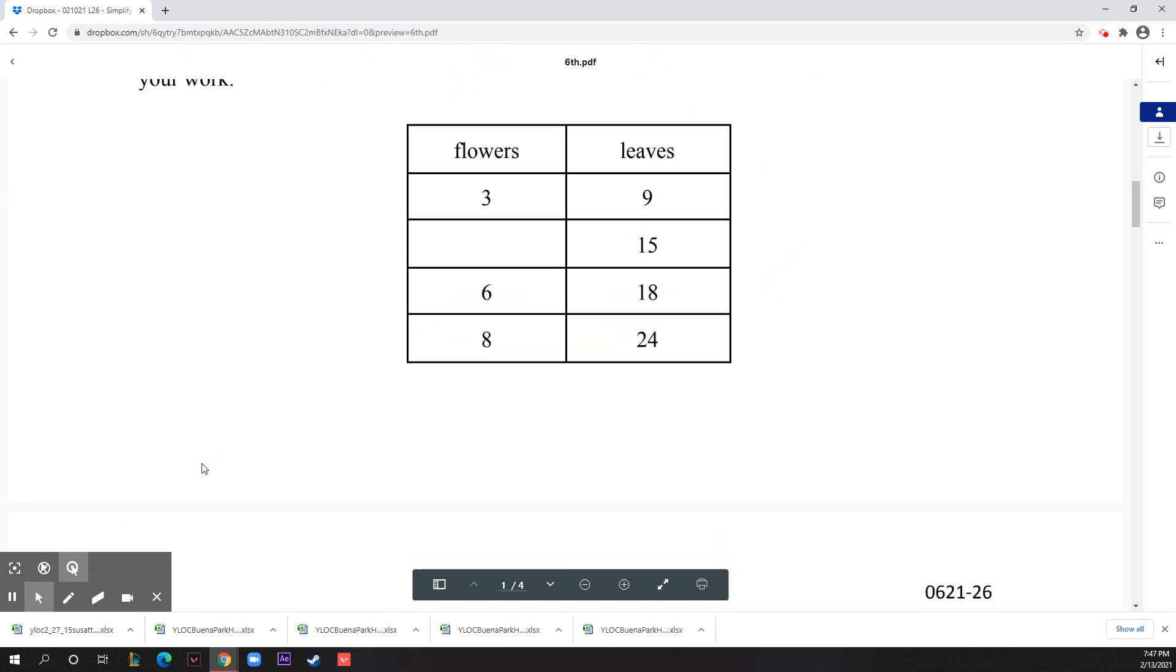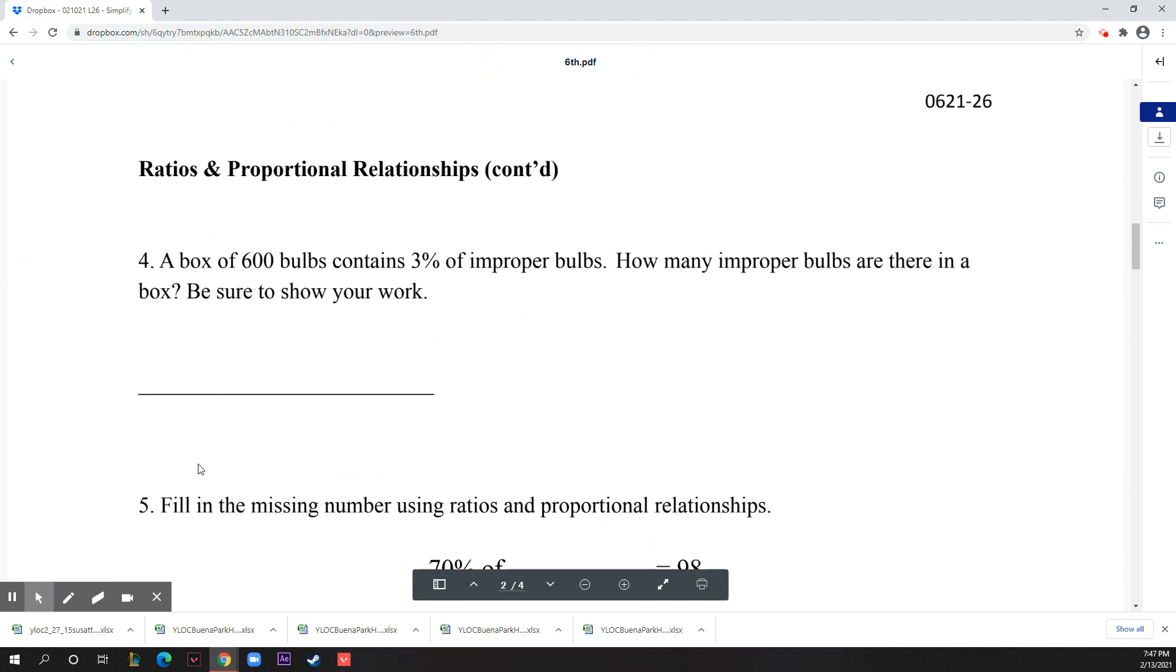On to the next section - more ratios and proportional relationships but different, with percentages. A box of 600 bulbs contains three percent of improper bulbs. How many improper bulbs are there in a box? Three percent is just the ratio 3 to 100, where for every 100 light bulbs there are three improper light bulbs. Now it's asking for a box of 600 light bulbs, which means you just multiply by 6, so you get 600 bulbs in total and the amount of improper bulbs is 3 times 6, which is 18. There are going to be 18 improper bulbs.